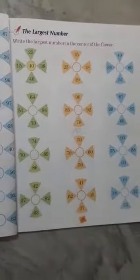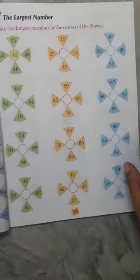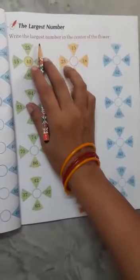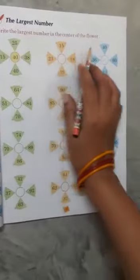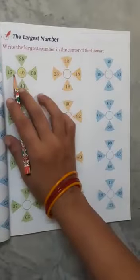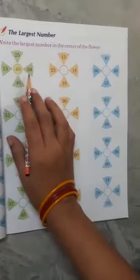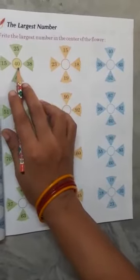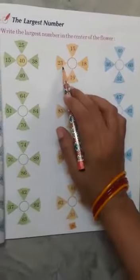Page number 35, the largest number. Write the largest number in the center of the flower. In this, look: 15, 25, 38, 40 - 40 is the largest number. In this way, 23, 15, 18, 19 - in this, which is the largest number? 23.